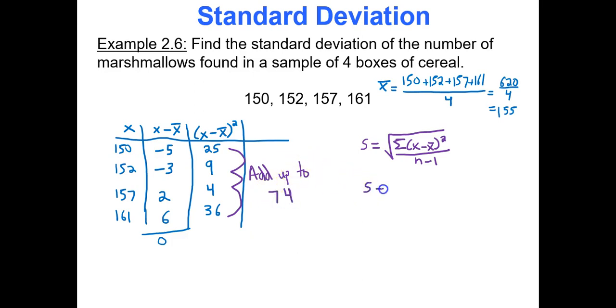Currently I know the sum of the squared deviations is 74. What's n minus 1? Well, n is 4 data values, so 4 minus 1 gives you 3. So I have s equals square root of 74 over 3. Do 74 divided by 3 in your calculator, then take its square root, and you get about 4.97. That is my standard deviation.